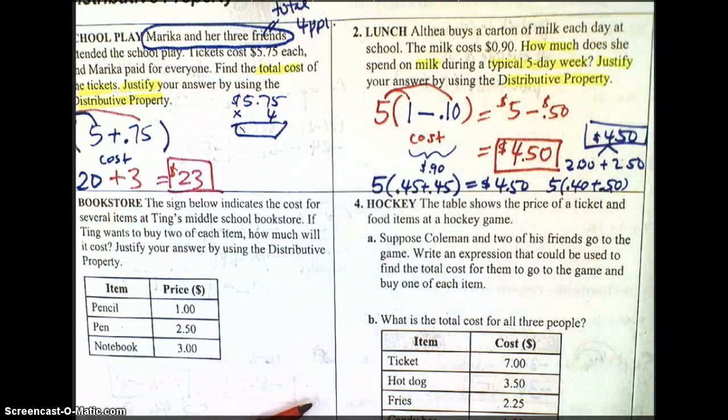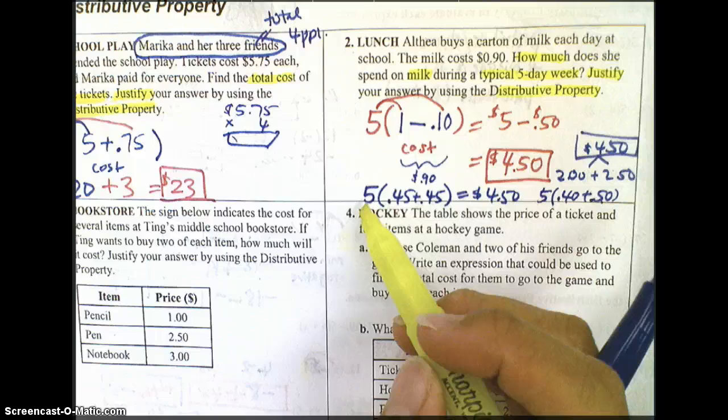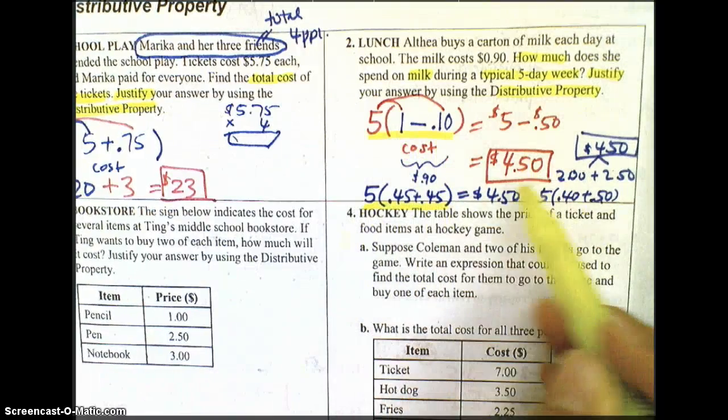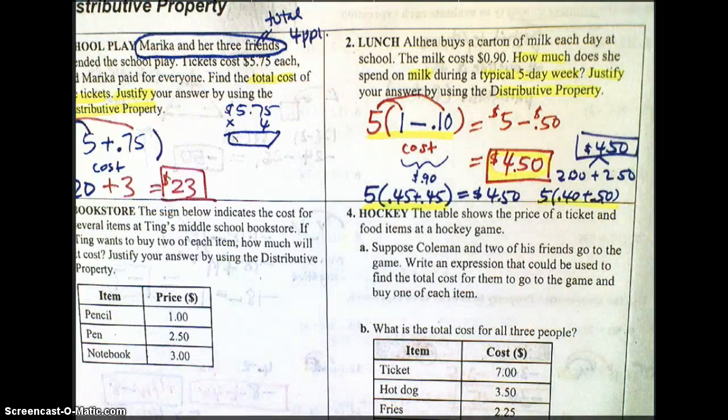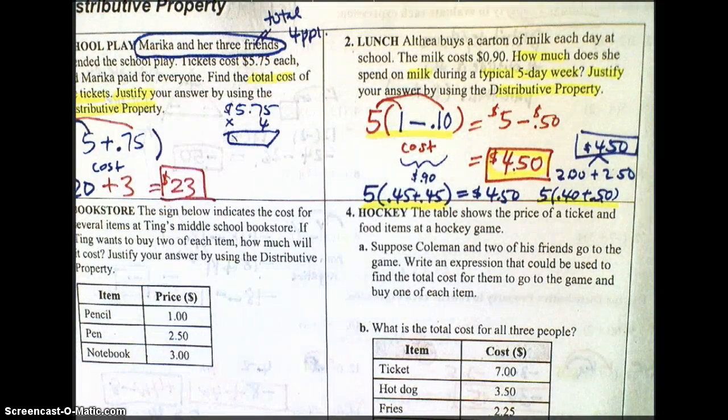Some of us might have done five times 40 cents plus 50 cents and split it up into 50 cents and 40 cents. That could be a little bit easier as well because that would be $2 plus $2.50 giving us $4.50. So as you can see, there are several ways for us to justify using distributed property, but all of our answers will end up to be $4.50 total for that milk.